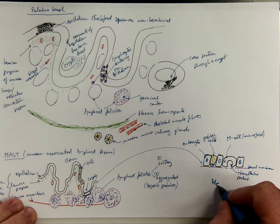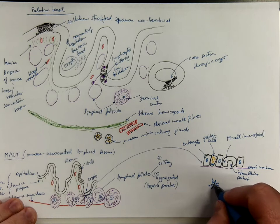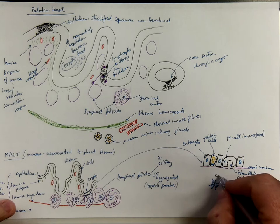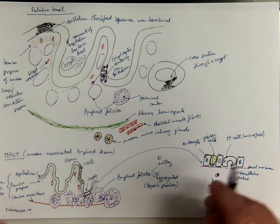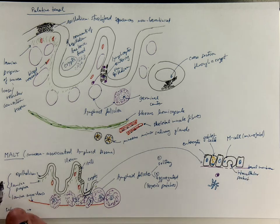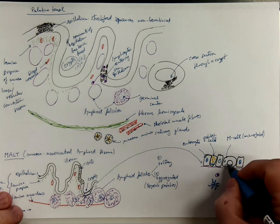There are immune cells such as dendritic cells, which are antigen-presenting cells. Or the lymphocytes, they can come into that pocket and make contact with these cells.